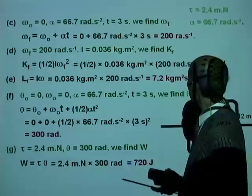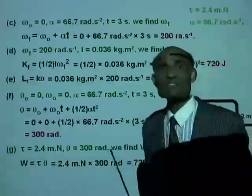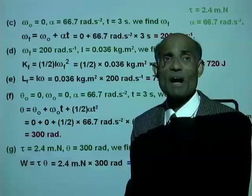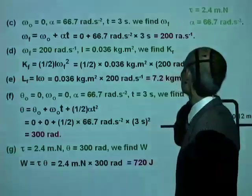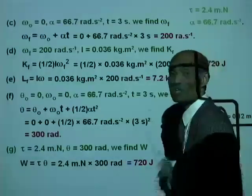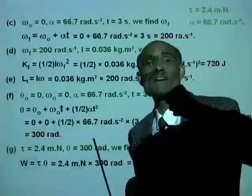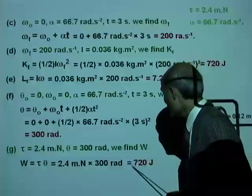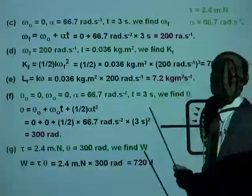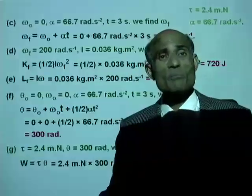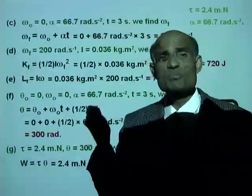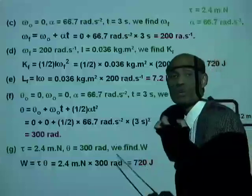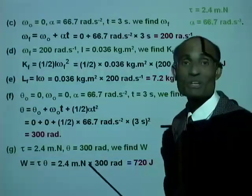The kinetic energy of 720 J equals the work done of 720 J — kinetic energy is a measure of the work done to give the object its angular velocity. The work needed to bring it to rest would be −720 J.